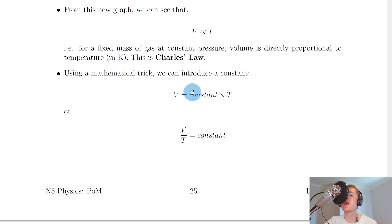However, it's always better to get the constant on its own, so if we divide both sides by T here to leave the constant on its own on the right hand side, we end up with V divided by T equals a constant. Or in other words, whenever we divide a volume by a temperature, it should equal a constant value.